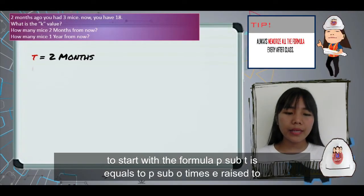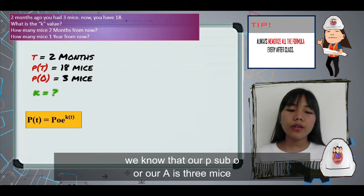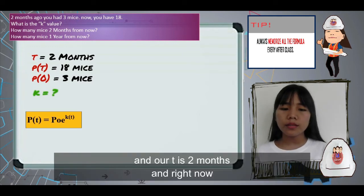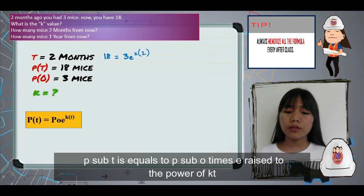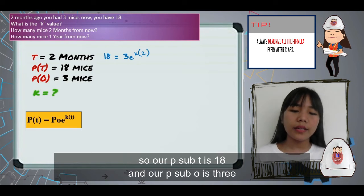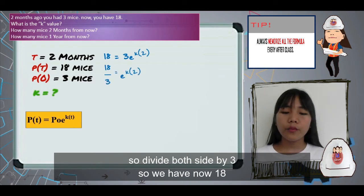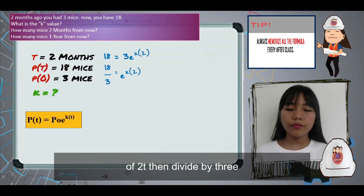Start with the formula P(t) = P₀e^(kt). Our P(t) is 18 and our P₀ is 3. Then, our t is 2. Divide both sides by 3.